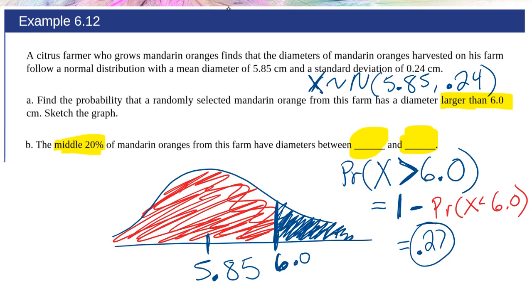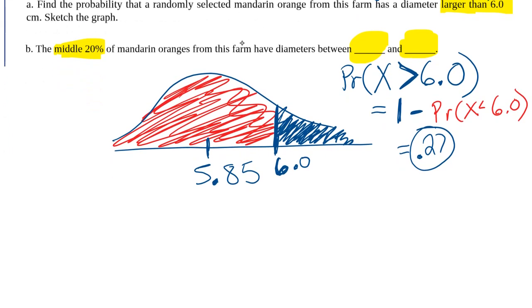So I'm going to, again, start by drawing out my distribution. And in the center, I have the mean, 5.85. Middle 20%. That basically means around the mean, there's a 20%, 20% on the inside, or 0.2.